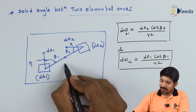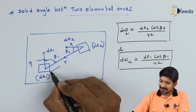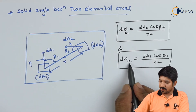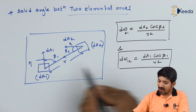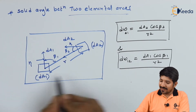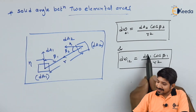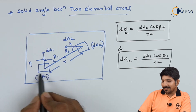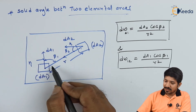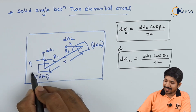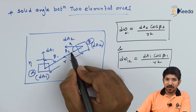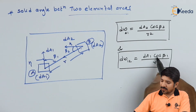Similarly, the solid angle of surface 1 at surface 2, written as dΩ(1,2), can be written as dA1 times cos(β1) upon r². The reason cos(β1) appears is that we are trying to align the given area to the line joining the two surfaces — we find the approximation of the surface area aligned to that line, which is why the cosine term comes into the picture. Again, the denominator is r².